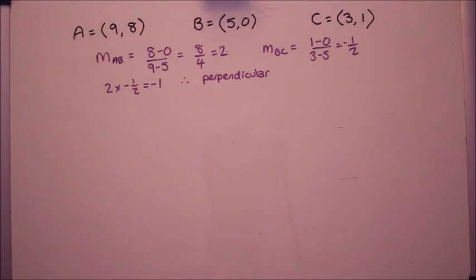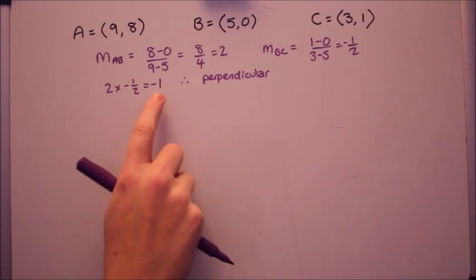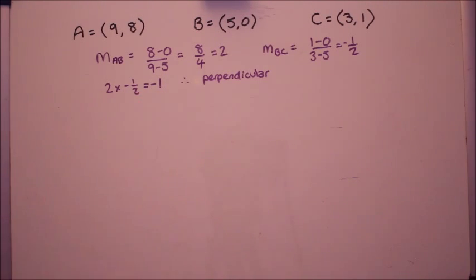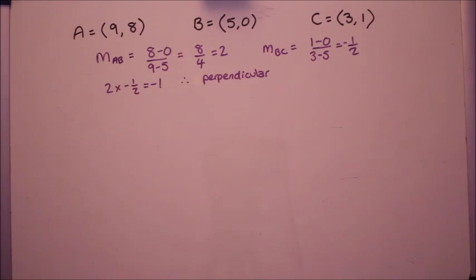So you might normally do perpendicular gradients knowing that you flip and change the sign. It's also good to be aware that they actually, the reason that you do that is they times together to give minus 1. And if you're showing the two things perpendicular, it's good to show that and then you can say therefore perpendicular. It's just a very neat way of doing it.